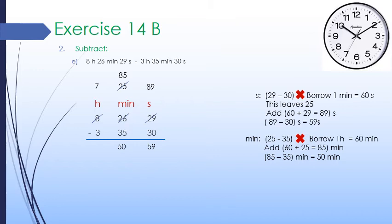We move to the hour column where 7 hours remain. We subtract 3 hours from 7 hours and get 4 hours. So our final answer is 4 hours, 50 minutes, 59 seconds.